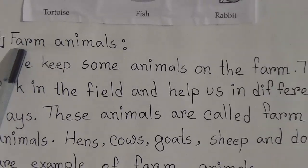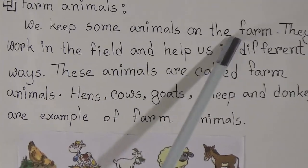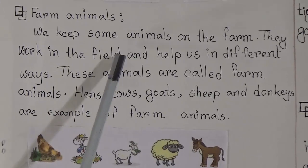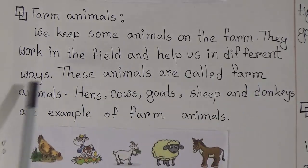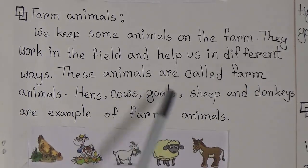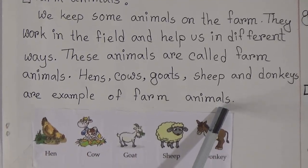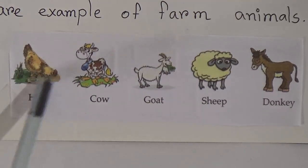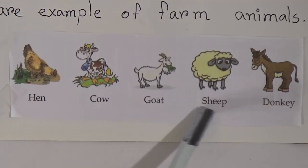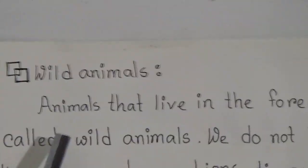The next topic is farm animals. We keep some animals on the farm; they work in the field and help us in different ways. These animals are called farm animals. Hens, cows, goats, sheep, and donkeys are examples of farm animals. Look, students — here are pictures of farm animals: hen, cow, goat, sheep, and donkey.